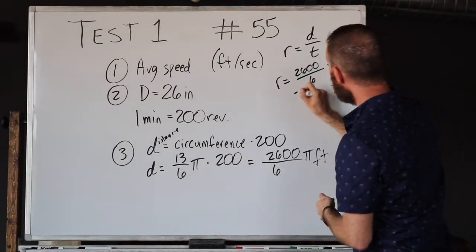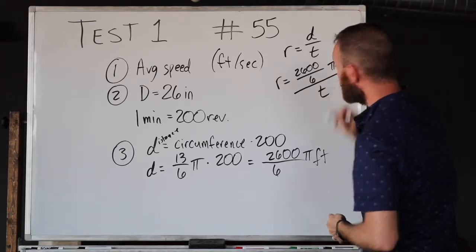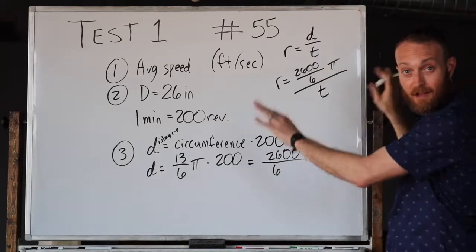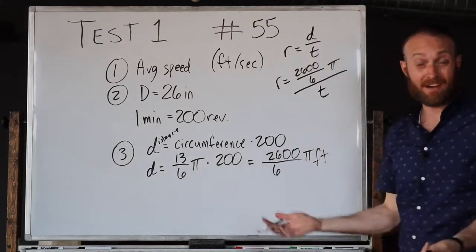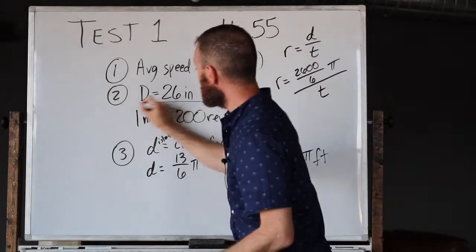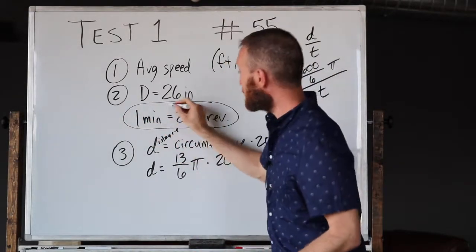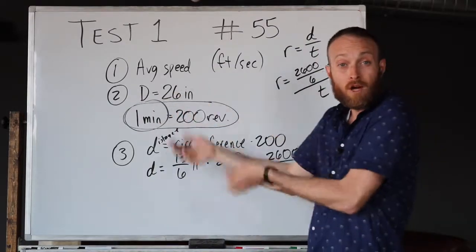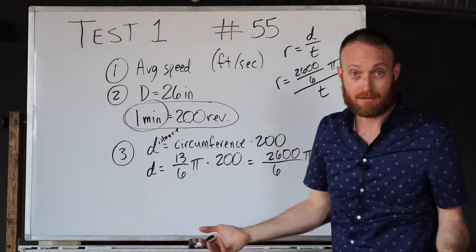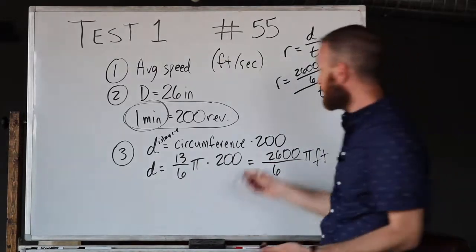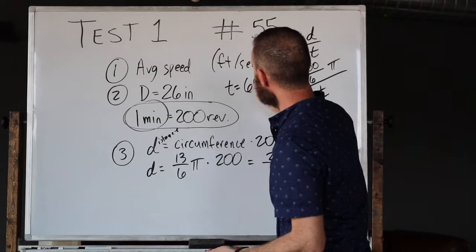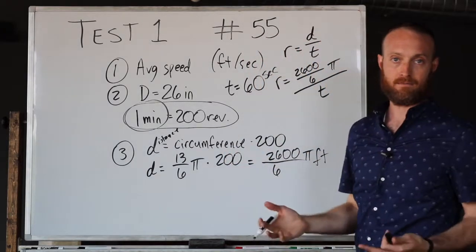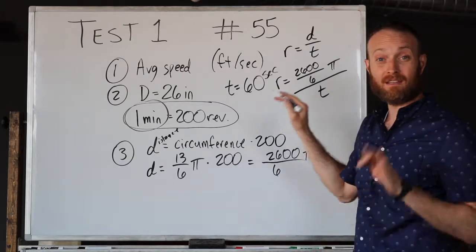Right now we need to find t, so we come back over here. We want one minute, but we need it in seconds. How many seconds are in a minute? This is the simplest part of the whole problem - t actually equals 60 seconds.